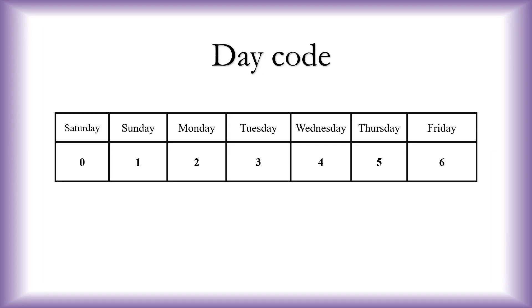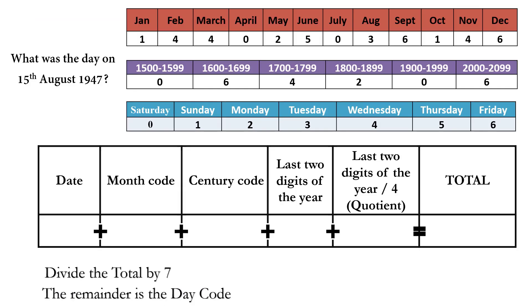Next we have the codes for the days of the week, and it's very simple — it's just 0, 1, 2, 3, 4, 5, 6. All you have to do is remember that it starts with Saturday as 0 and ends with Friday as 6. Now that we've learned the various codes, we're going to find the answer: what was the day on 15th August 1947?